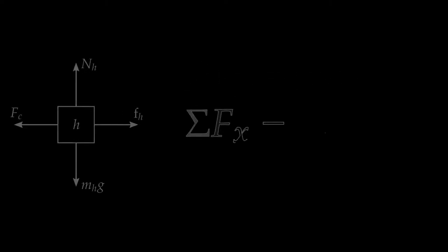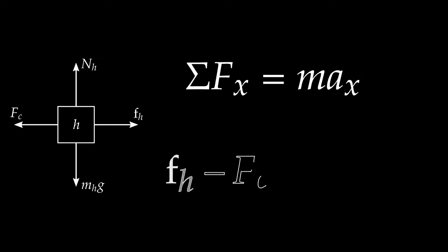Writing Newton's second law along the x-axis for the horse free body diagram gives a slightly different-looking equation. With right as positive: the friction force at the horse's hooves fH is positive and goes first. So fH minus FC equals mH times acceleration. For zero acceleration these two forces are equal. For positive acceleration, the friction force at the hooves must exceed the cart's backward pull. The horse has to win that battle to produce positive acceleration.